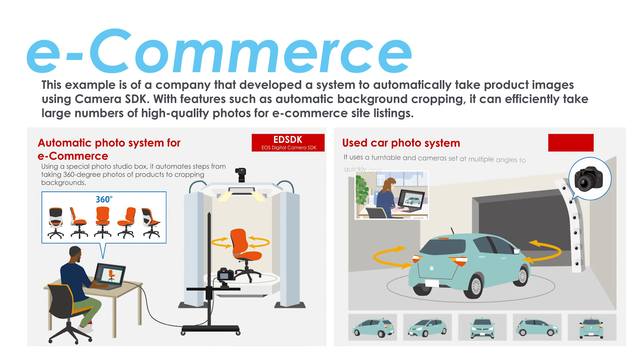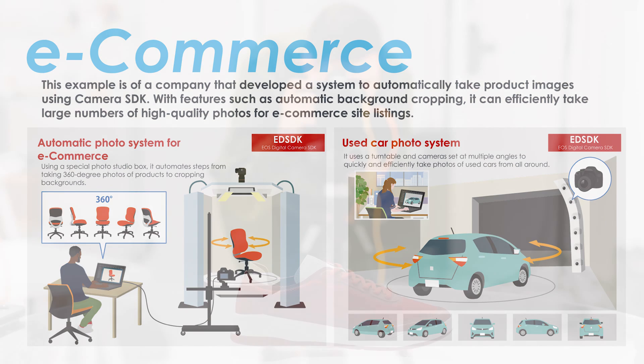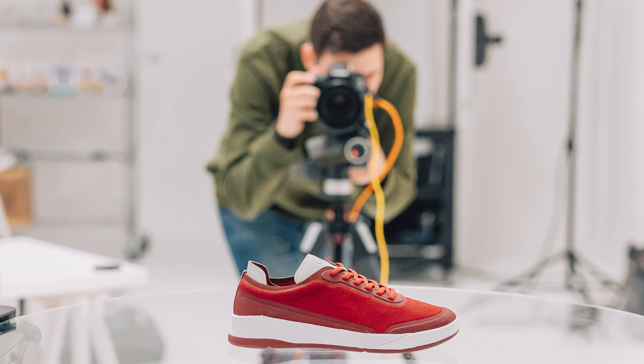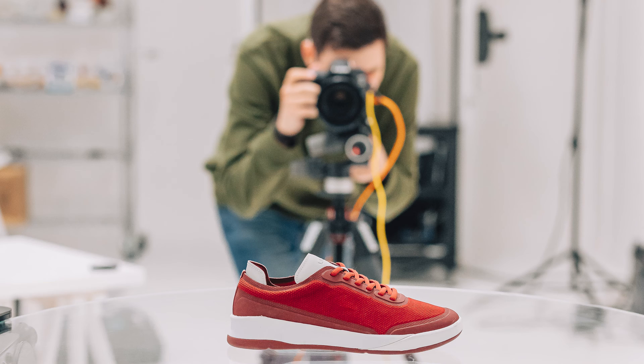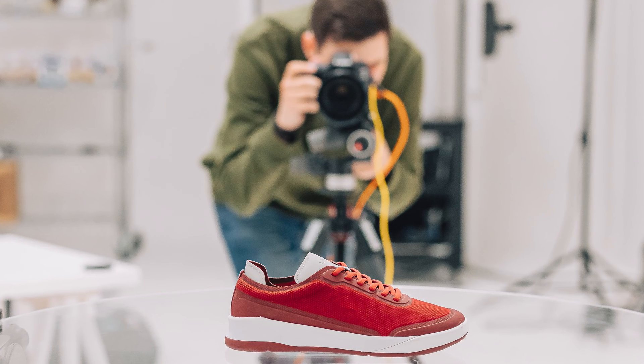E-commerce is a growing area for many businesses, and our range of photography and video cameras, especially those in the EOS R system, are ideally suited, as they're designed to capture colour, detail, and texture with unrivalled quality. You can be assured of stunning results every time, giving your products real appeal, and helping your business to minimise product returns and increase profits.